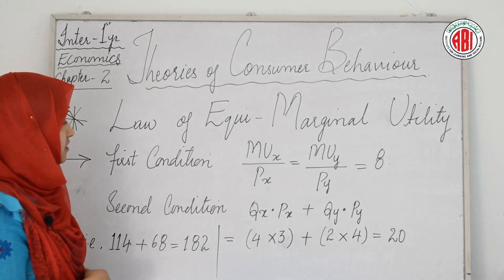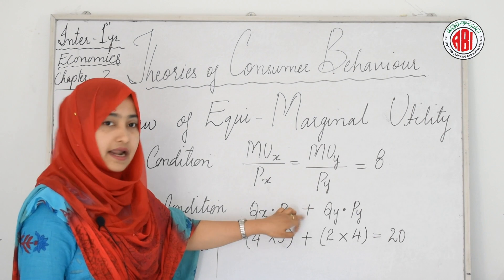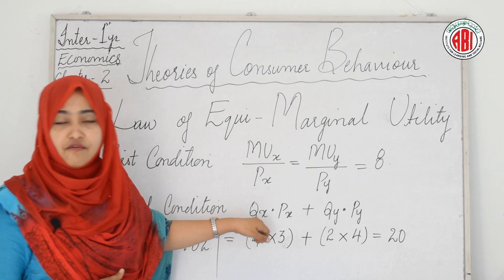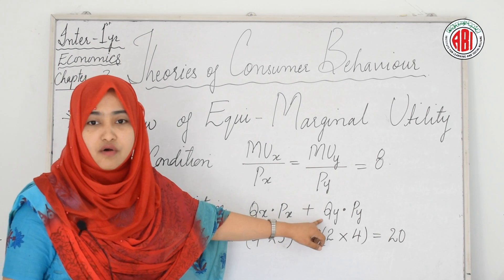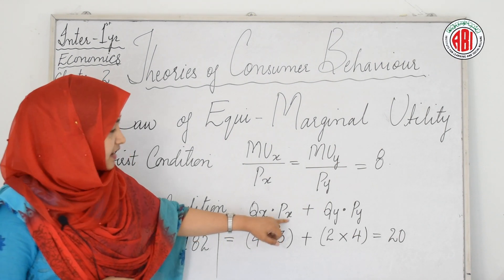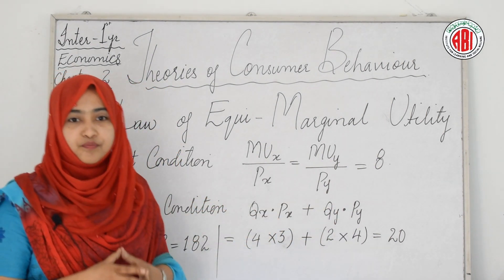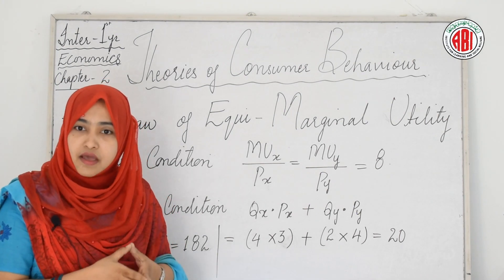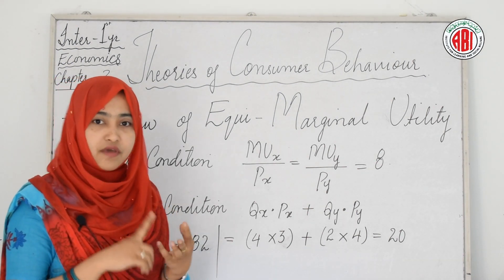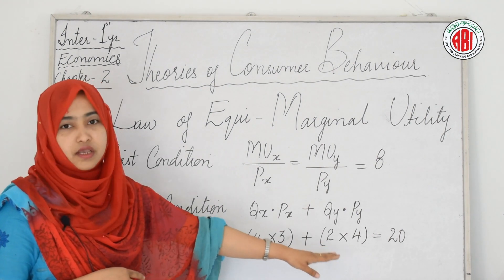The second condition is that income must equal expenditure: QX × PX + QY × PY = Income (Y) = Expenditure (E). Here QX is the quantity of X, QY is the quantity of Y, PX is the price of good X, and PY is the price of good Y. Since the price of X is 3 and the price of Y is 4: 4 × 3 + 2 × 4 = 20.